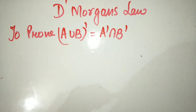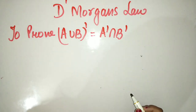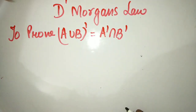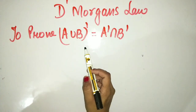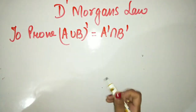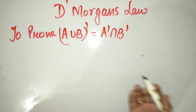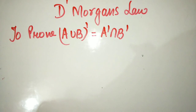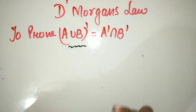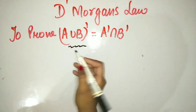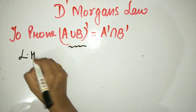Hello Grade 11, welcome to my YouTube channel. Today I am going to prove De Morgan's Law. As I have already discussed De Morgan's Law in the previous video, now we are going to prove it — that is, left hand side equals to right hand side. The main concept is that you take the left hand side and make it equal to the right hand side.